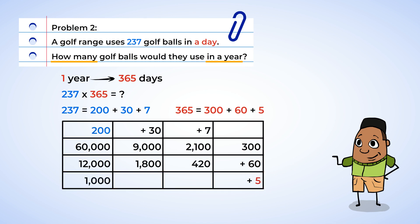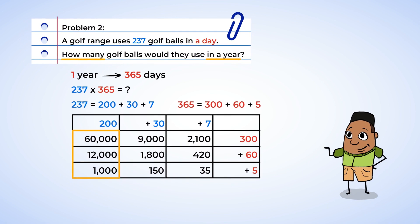200 times 5 is 1,000, and 30 times 5 is 150, and finally 7 times 5, 35. Now we can add all these products together. So let's start with all of the columns. We've got 60,000 plus 12,000 plus 1,000, and that is 73,000. Moving over, we've got 9,000 plus 1,800 plus 150 equals 10,950. And in the last column, we've got 2,100 plus 420 plus 35 equals 2,555.